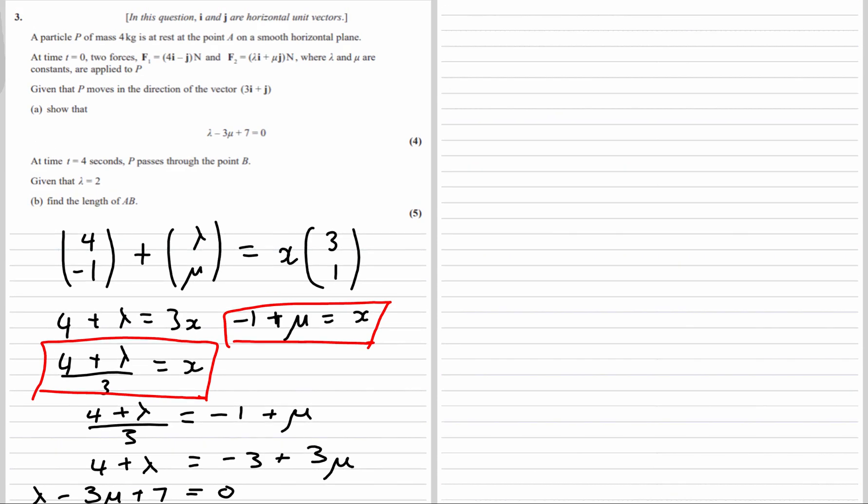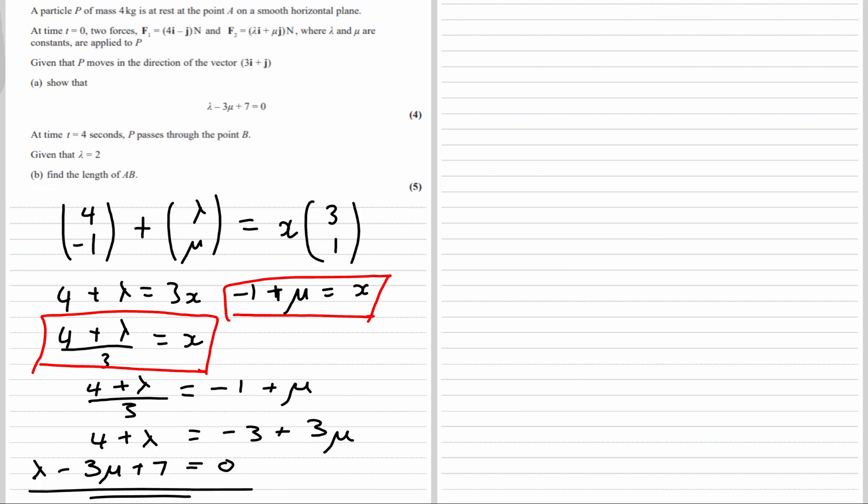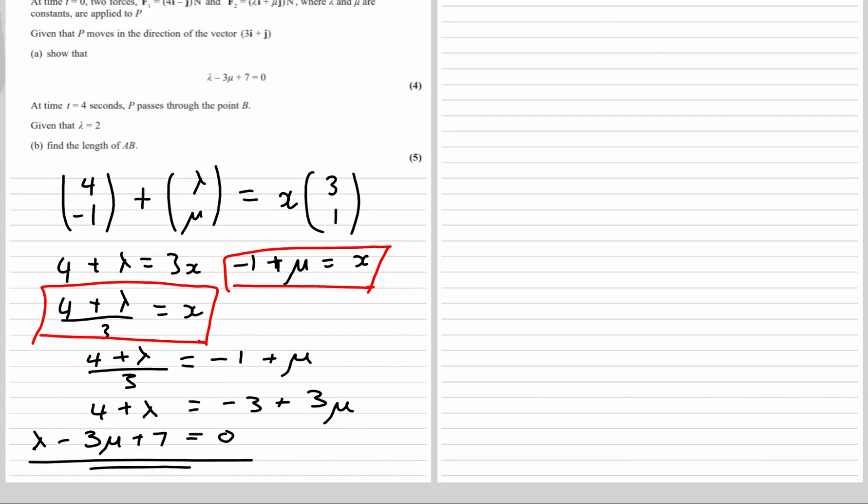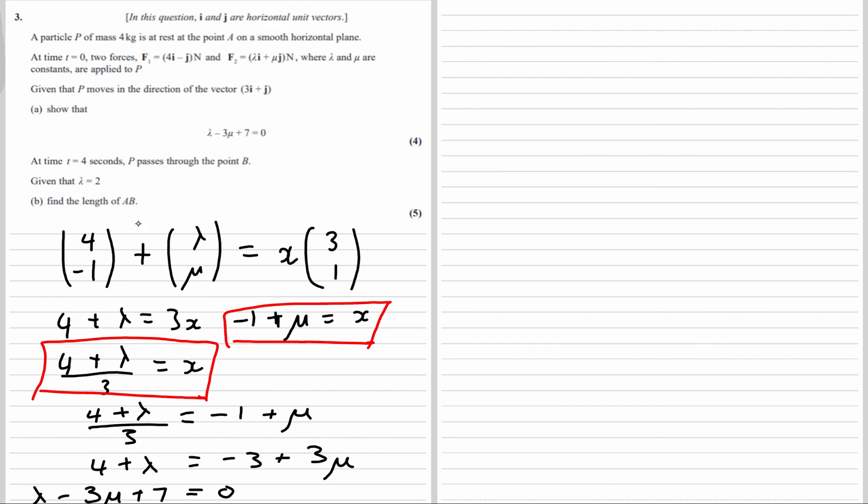At time t equals 4 seconds, P passes through the point B. Given lambda is 2, so we'll have 2 minus 3mu plus 7 equals 0. So we've got 9 minus 3mu is 0. So mu must be 3.